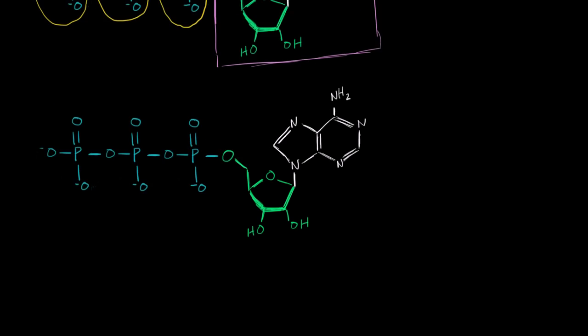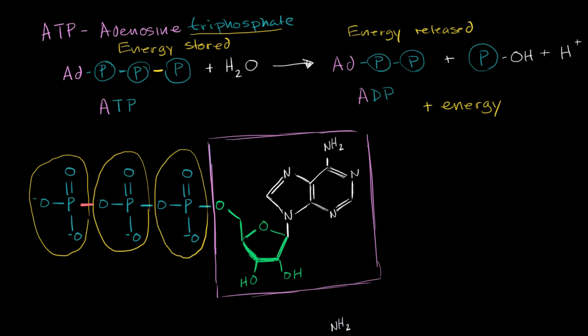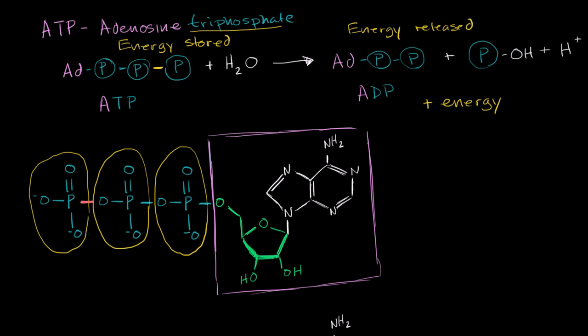So in the previous video, we talked about how an ATP molecule can, in the presence of water, hydrolysis will take place. And one of the phosphoryl groups could be plunked off. And then how that would release energy, because these electrons are going to be able to go into a lower energy state.